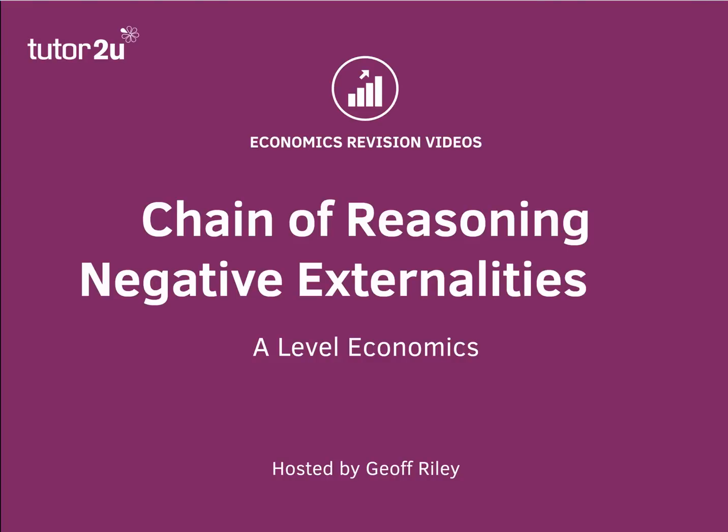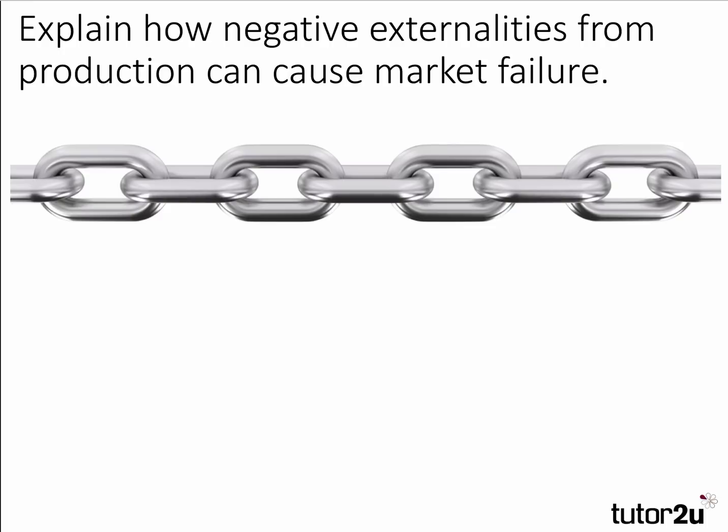Hi everybody. Here is another example of a chain of reasoning, a technique used to score higher analysis marks in your A-level economics papers. We're going to take the example today of negative externalities from production. The question is: explain how negative externalities from production can cause market failure.